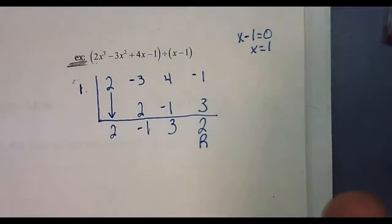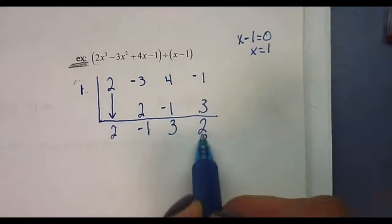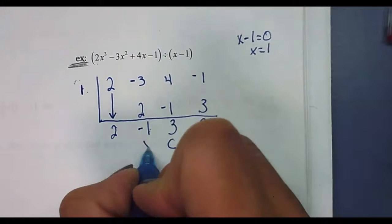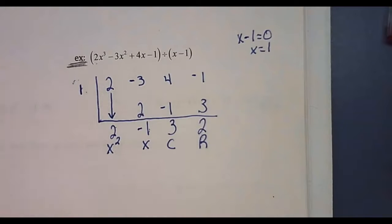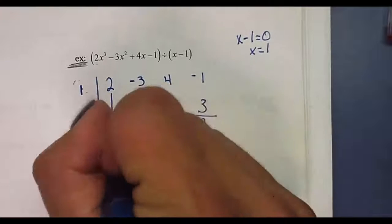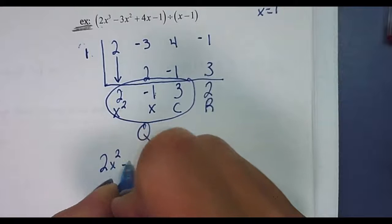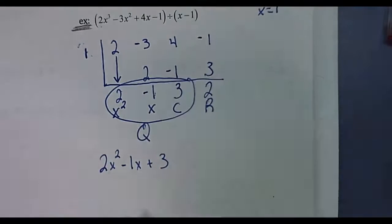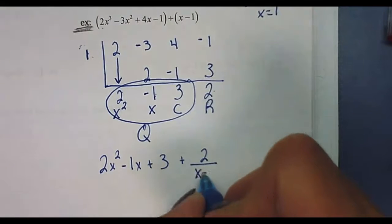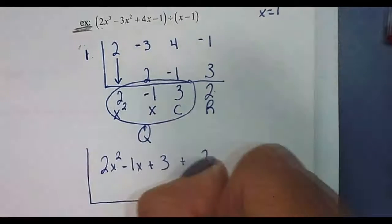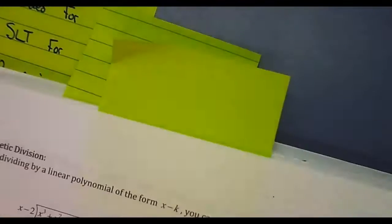The very last number is the remainder. Since we do have a remainder, we do not have factors. If you get zero at the end, you've found factors; if you get a remainder, you don't have factors. The remainder stays as the remainder, the next number is the constant, then x, then x squared, and so on to the left. This part is your quotient and this is your remainder. The answer is written as the quotient plus a fraction — remainder over what you divided by. So x minus one was not a factor.